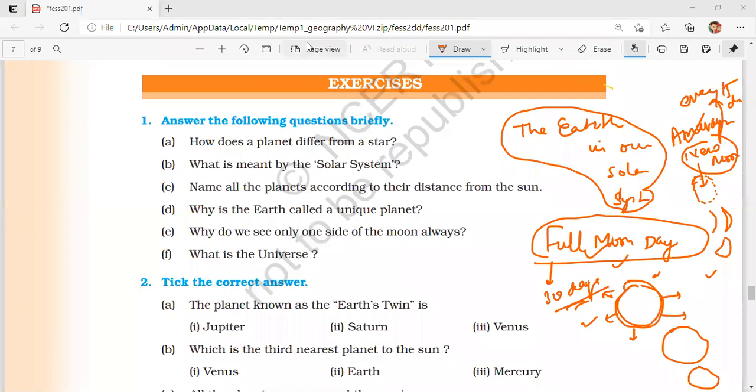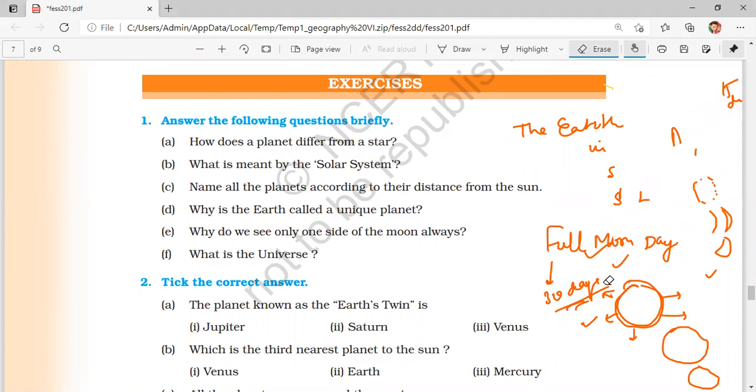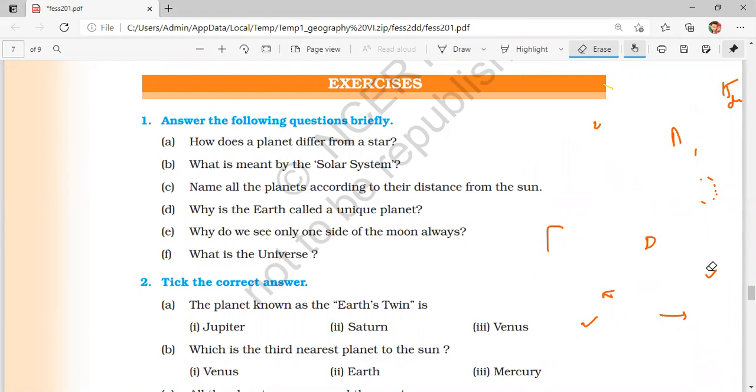Let's start the solution of this chapter. Before that, we need to erase this so that we can write answers to these questions and we do not have any confusion. The first question in front of you is: how does a planet differ from a star?